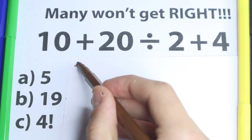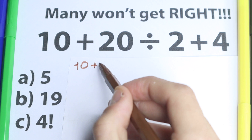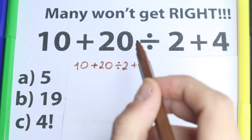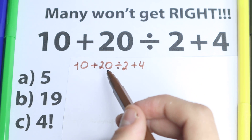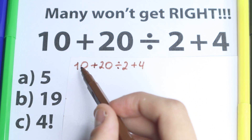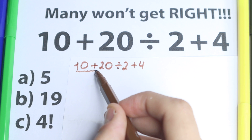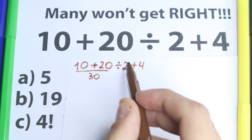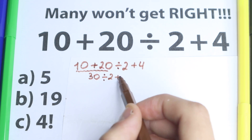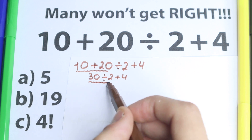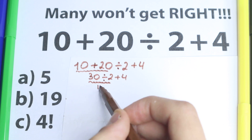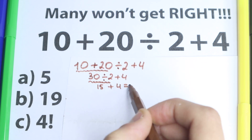Before solving this I want to start with a common solution. We have 10 plus 20 divided by 2 plus 4. One part of students solve it like this — the most common solution I've ever seen. They say: 10 plus 20 from left to right equals 30. Then 30 divided by 2 plus 4, which is 30 divided by 2 equals 15, and 15 plus 4 equals 19.